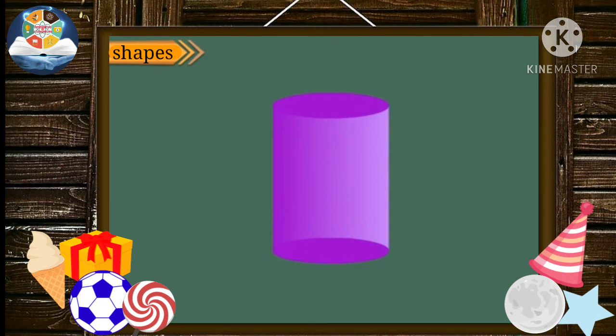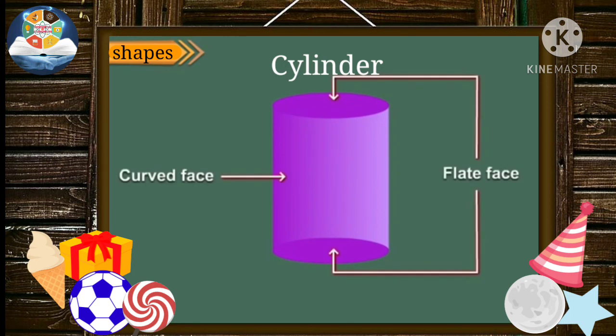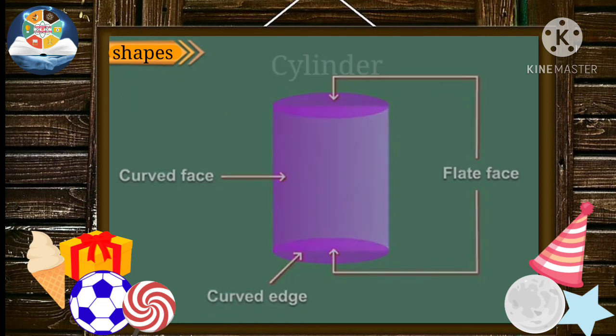Now, look at this shape. It is like a can or drum. It is called a cylinder. It has three faces, two flat and one curved. It has two curved edges and no vertex at all.